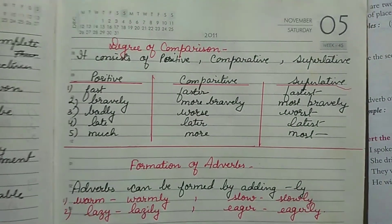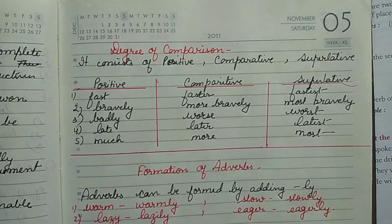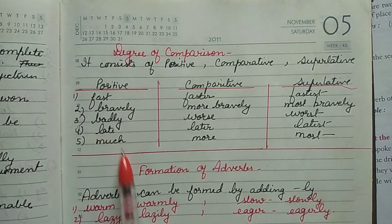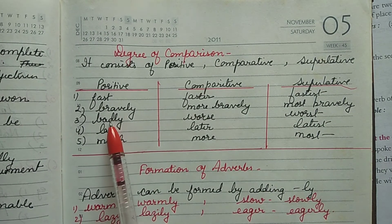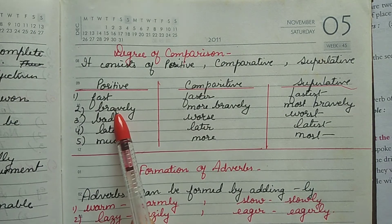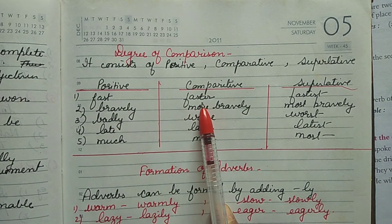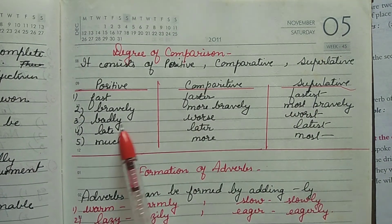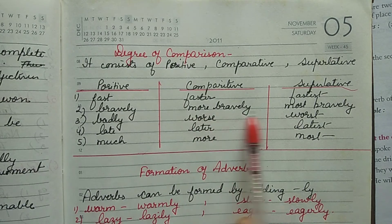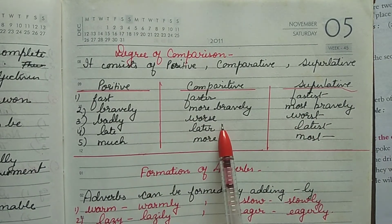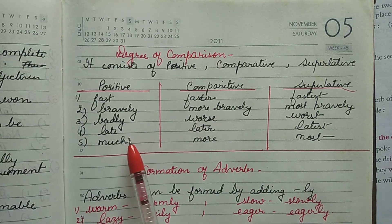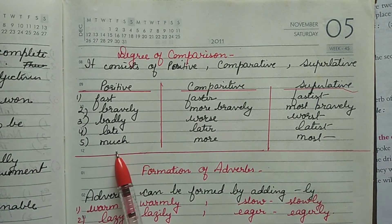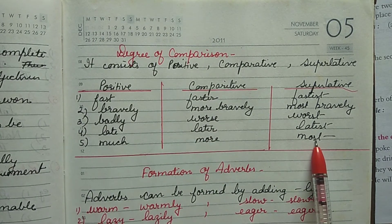Now let us discuss the degree of comparison. Adverbs can be used in three forms: positive, comparative, and superlative. Examples: fast → faster → fastest. Bravely → more bravely → most bravely. Badly → worse → worst. Late → later → latest. Much → more → most.